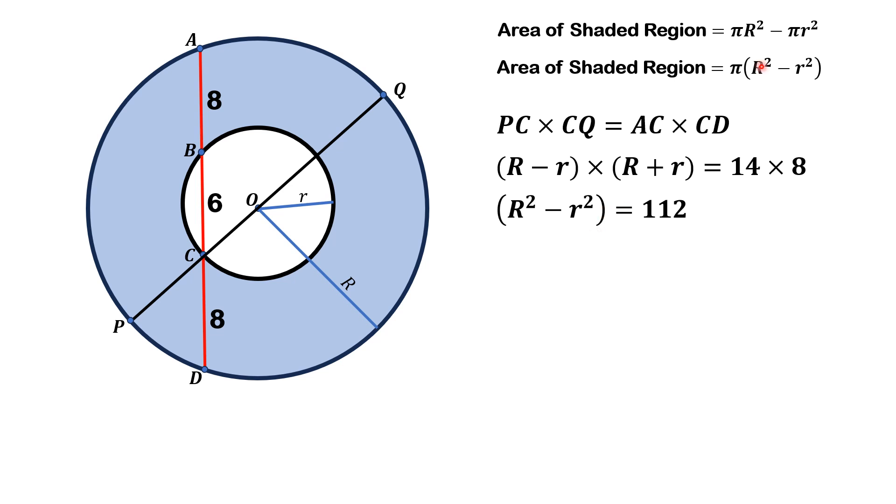Now, substituting this value over here, capital R squared minus small r squared, that is 112, and then we get area of the shaded region is equal to 112π. That is the answer.